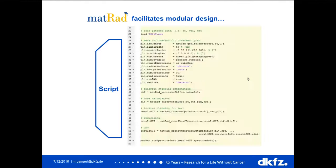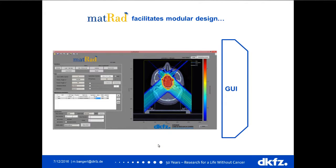Here is how our workflow looks in a script. I load a dataset — the TG119 phantom in this case — in the native mat format, then set plan parameters such as gantry angles and couch angles, and select a radiation mode, photons in this case. I then generate the steering information describing the geometrical setup of the irradiation, calculate the dose influence matrix, run optimization, do a sequencing step followed by direct aperture optimization refinement, and finally look at the result. All these functions can also be triggered from our graphical user interface.